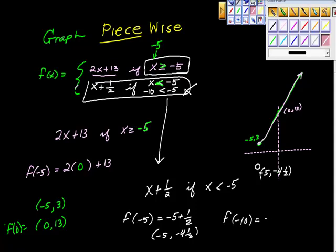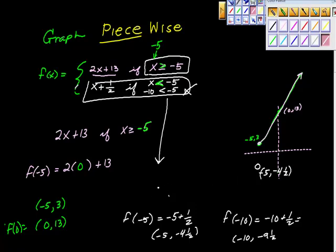F of negative 10 is negative 10 plus 1 half, so I get the point. Negative 10 plus 1 half is negative 9 and a half, isn't it? So where would that be? Whoa, all this crap over here, I guess. Sorry. And it's this point here, and I don't know. Negative 10, negative 9 and a half. And I just connect the dots, right? It says here I want those x values that are less than negative 5. Well, the x values that are less than negative 5 are to the left of that point, aren't they? And it would go this way.